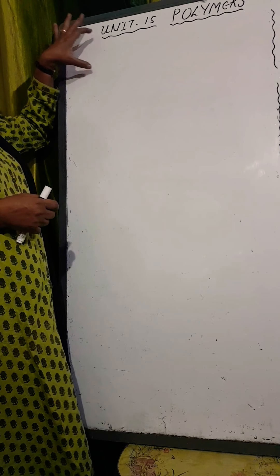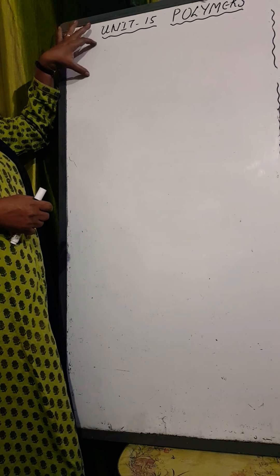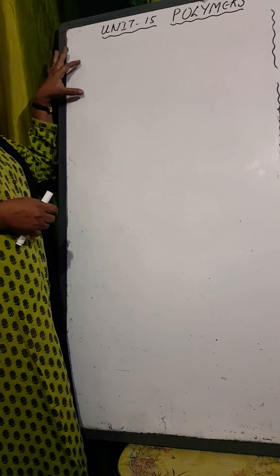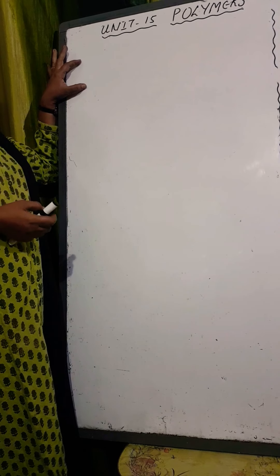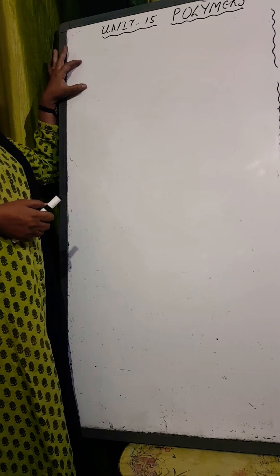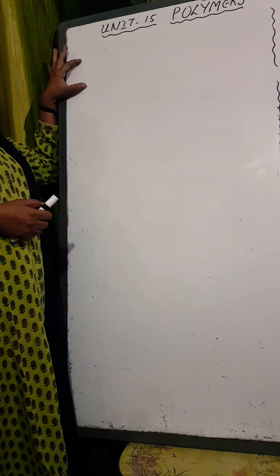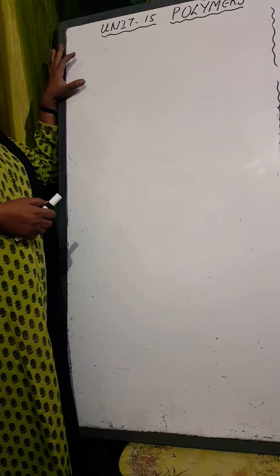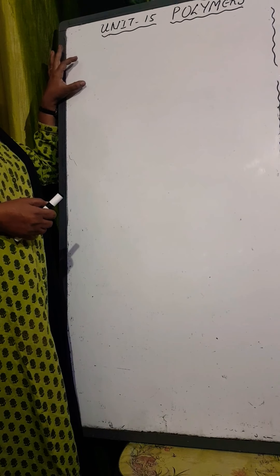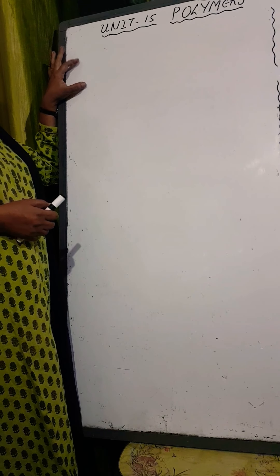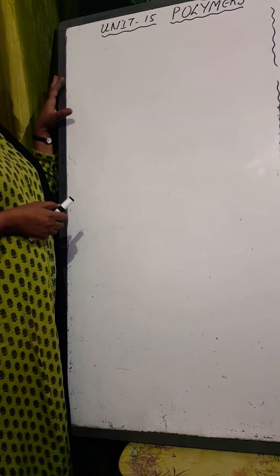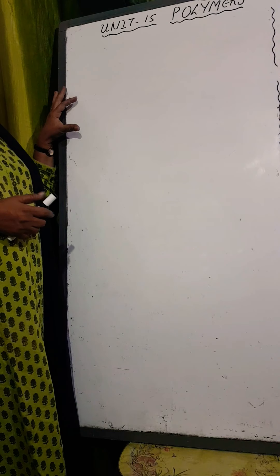So far in this unit 15 on polymers, we have discussed the classification of polymers, addition polymers, the different types of addition polymers - homopolymers and copolymers - then condensation polymers, polyesters, polyamides, etc. Now only two minor topics are left: biodegradable polymers and the mechanism of polymerization.